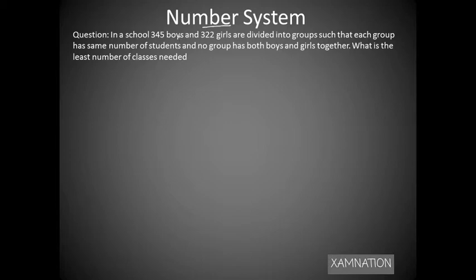Okay students, so today we are taking the question from number system. The question given is: in a school, 345 boys and 322 girls are divided into groups such that each group has same number of students and no group has both boys and girls together. What is the least number of classes needed?